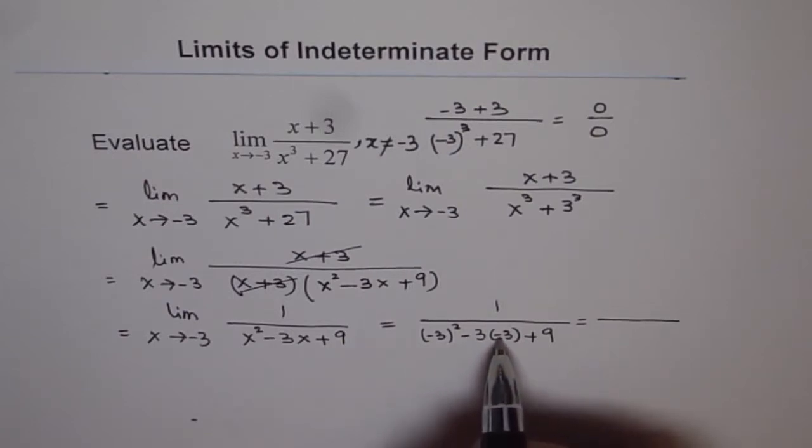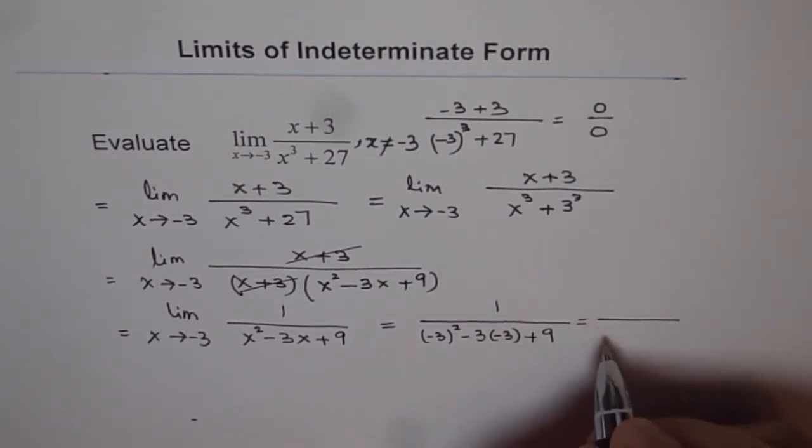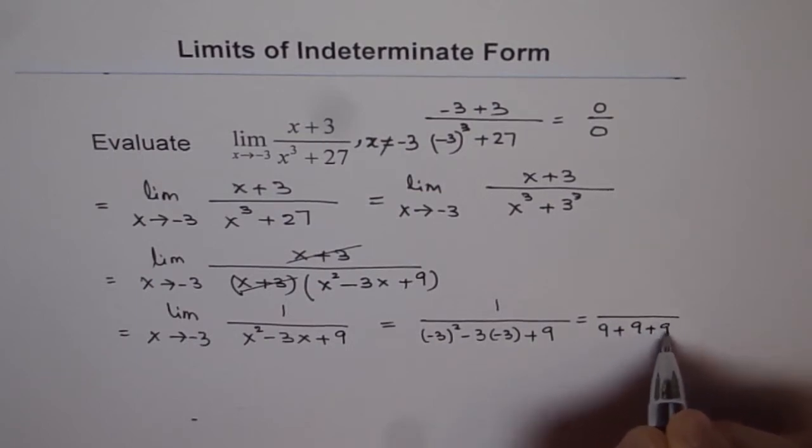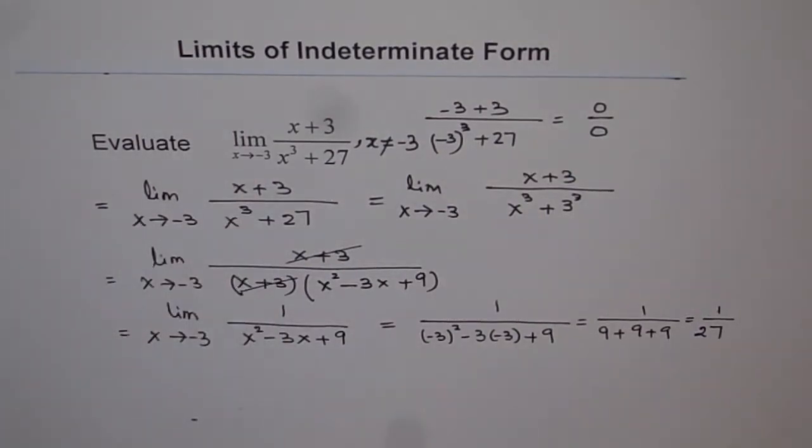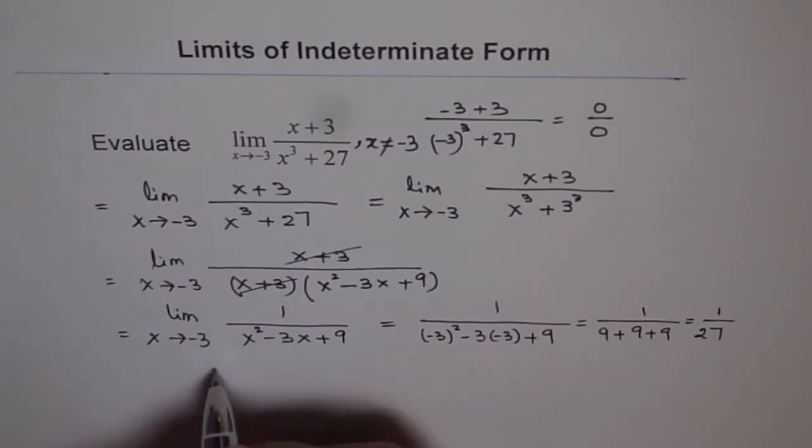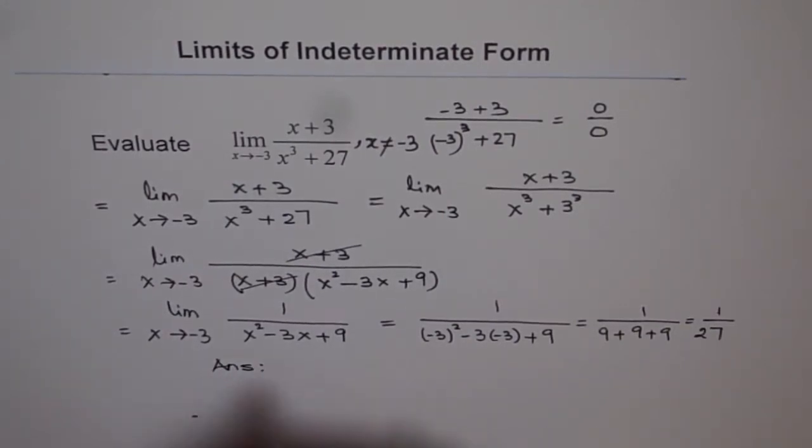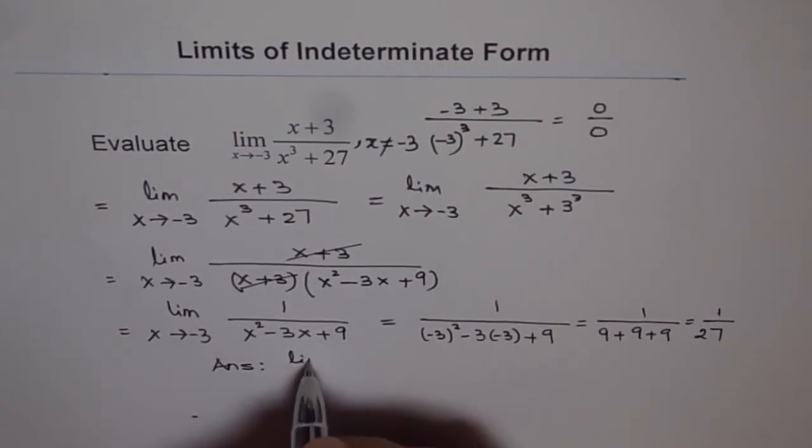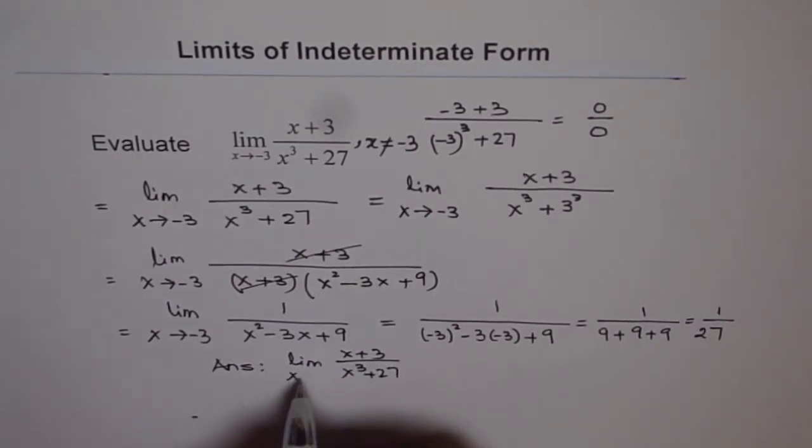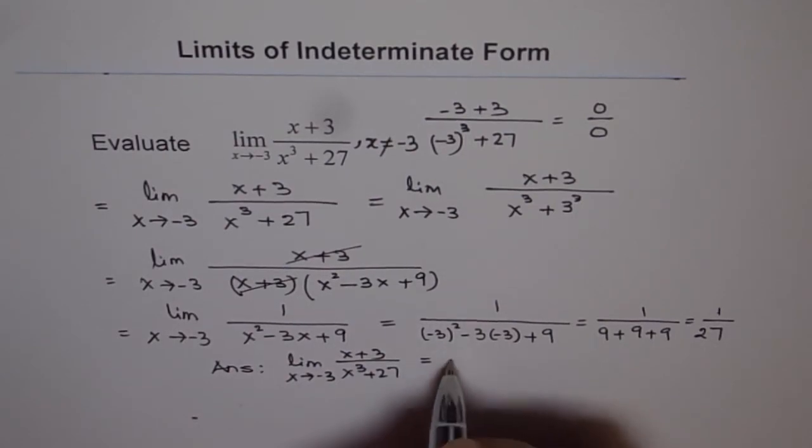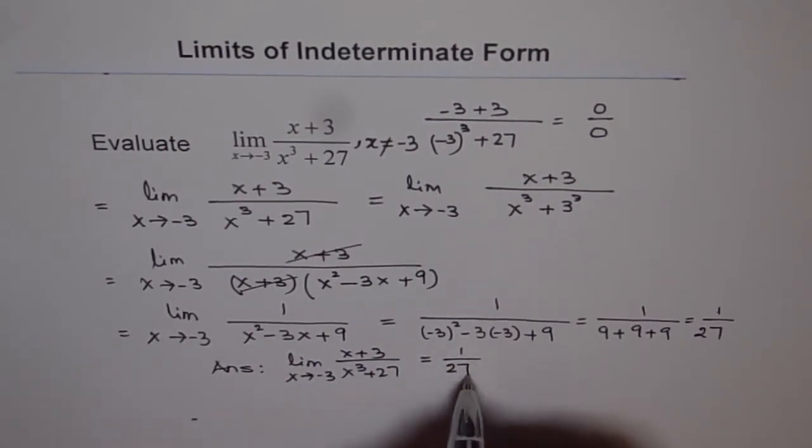Minus 3 squared is 9, and this is minus and minus is plus, so again we get 9. So we get 9 plus 9 plus 9, which is 1 over 27. So limit of this function as x approaches minus 3 is 1 over 27. Therefore our answer is limit of the function x plus 3 over x cube plus 27 as x approaches minus 3 equals 1 over 27.